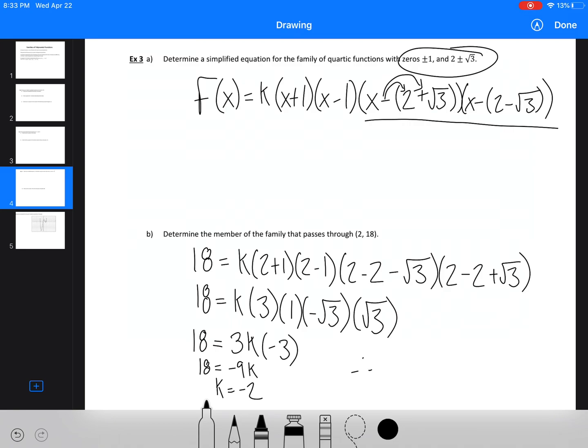Therefore, we've got f(x) equals negative 2(x plus 1)(x minus 1)(x minus 2 plus root 3)(x minus 2 minus root 3). Now you could expand all that out. Some questions will ask you to write a simplified equation. It did up here, so we probably should have expanded all of this out.